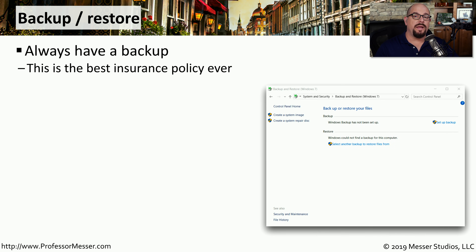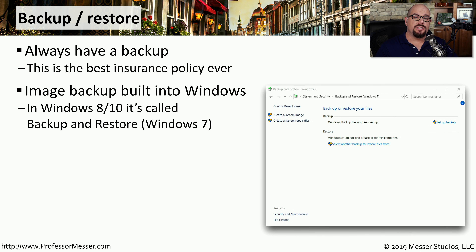One of the best ways to recover from malware is to simply restore from a known good backup. That's why it's so important to always have a backup ready to go. There's imaging software built into Windows 7, Windows 8, and Windows 10. In Windows 7 it's called Backup and Restore, and in Windows 8 and Windows 10 it's called Backup and Restore Windows 7. Using this imaging software, you can back up your entire system to an image and then restore either the entire image or individual files.